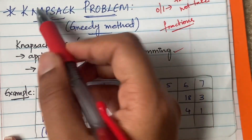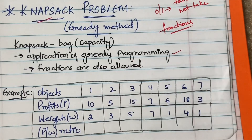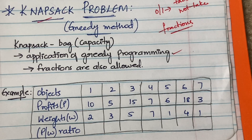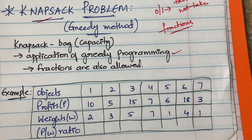A knapsack is nothing but a bag, and it basically has some capacity — 10 kg, 20 kg, 30 kg, some capacity. You will have some objects with you. Let's say you have a bag of 10 kg and you have objects like apples which are 2 kg, oranges which are 3 kg, and so on. You have to fit all these objects into the 10 kg bag so that you get maximum profit.